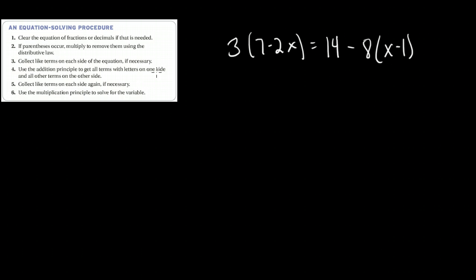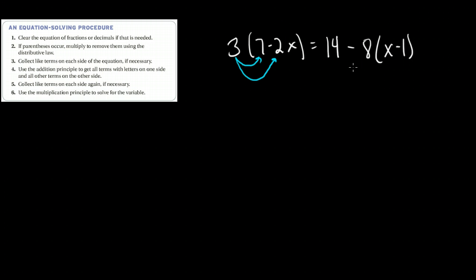Step 2 says: if parentheses occur, multiply to remove them using the distributive law. Clearly I have parentheses on both sides of my equation, and I can distribute my 3 to the 7 and my 3 to the negative 2x there. Now this 14 minus 8 times a quantity — the 14 doesn't distribute. However, this negative 8 does, and I can distribute that negative 8 to the x and to the negative 1 on this side of the equation.